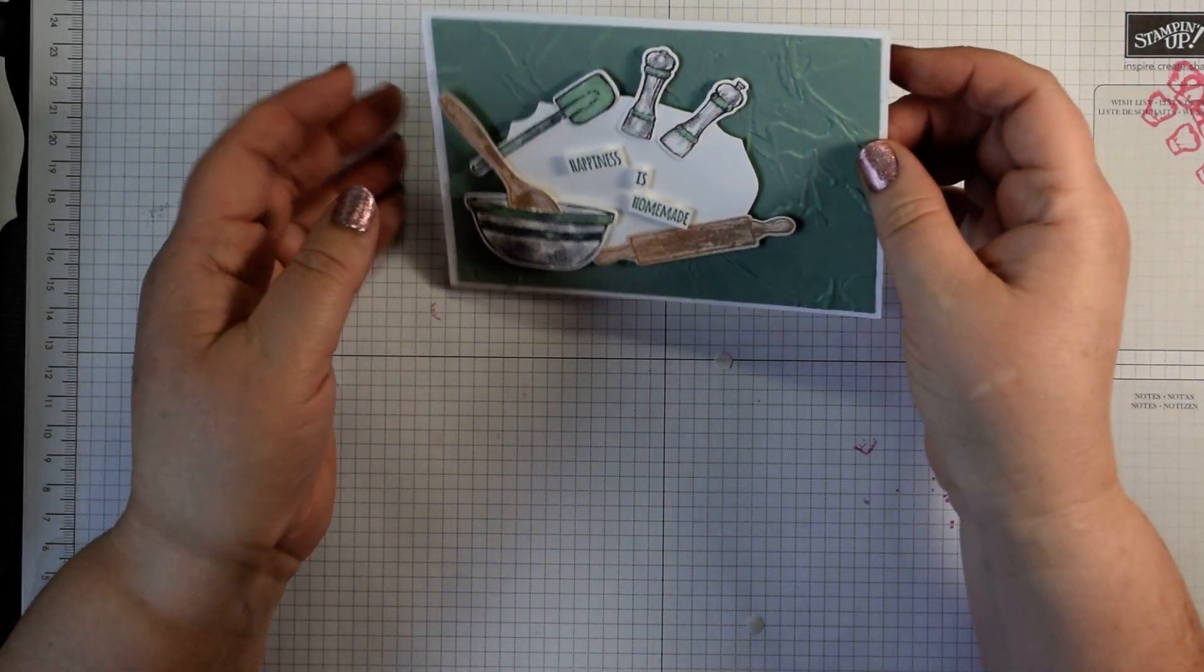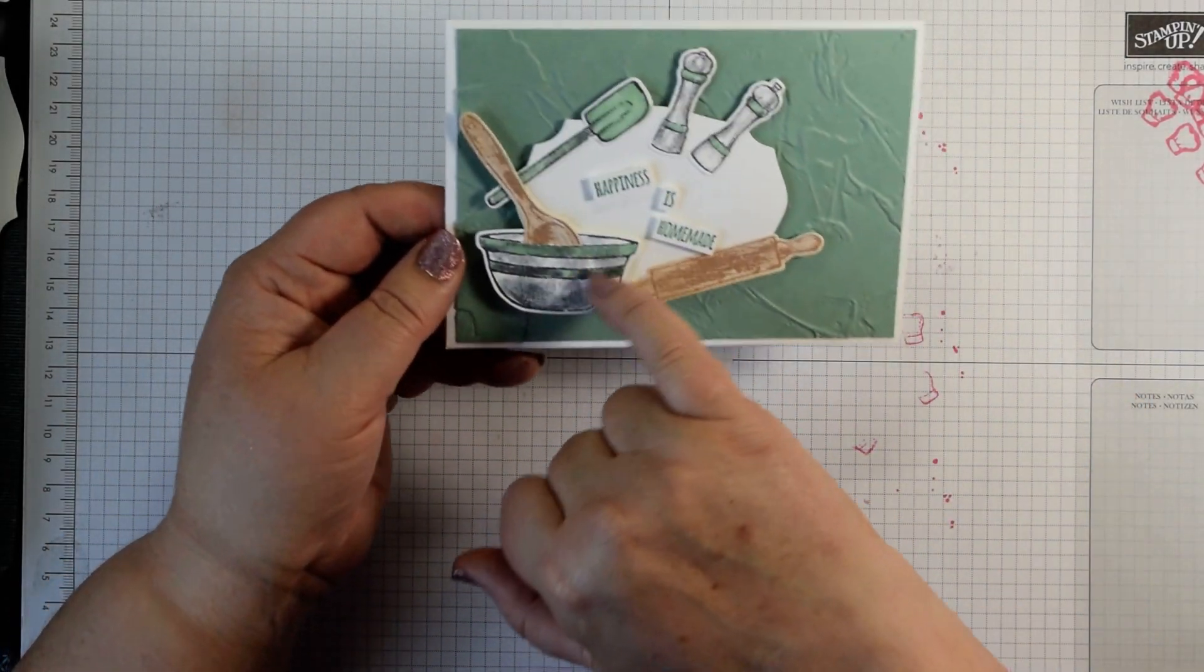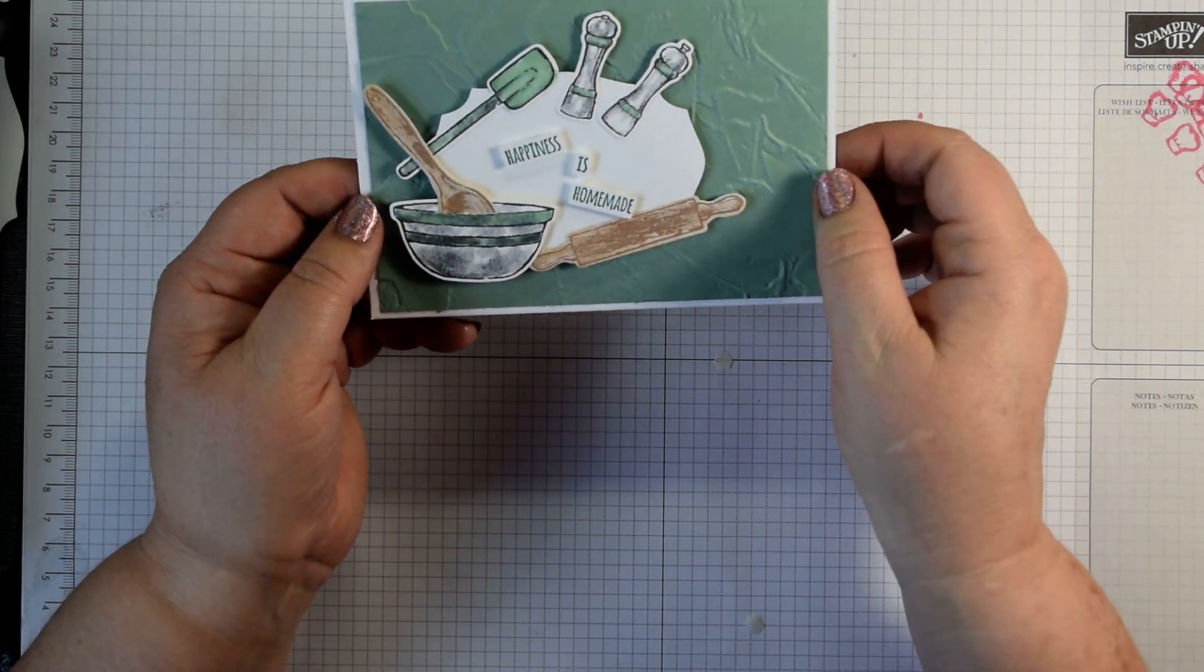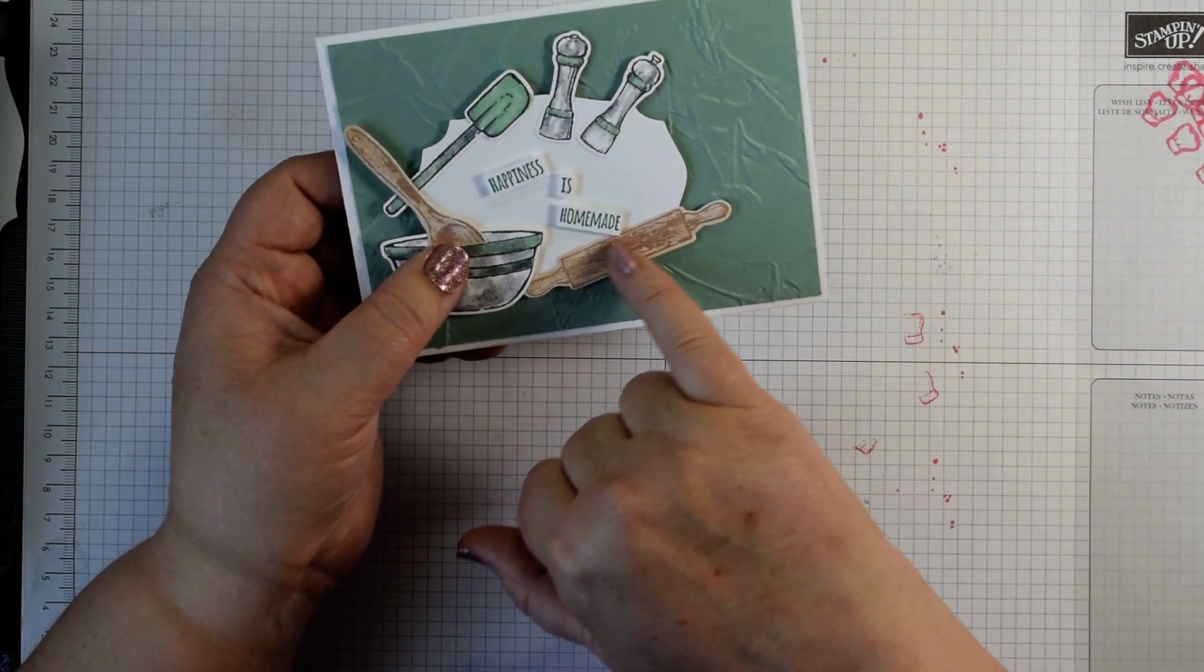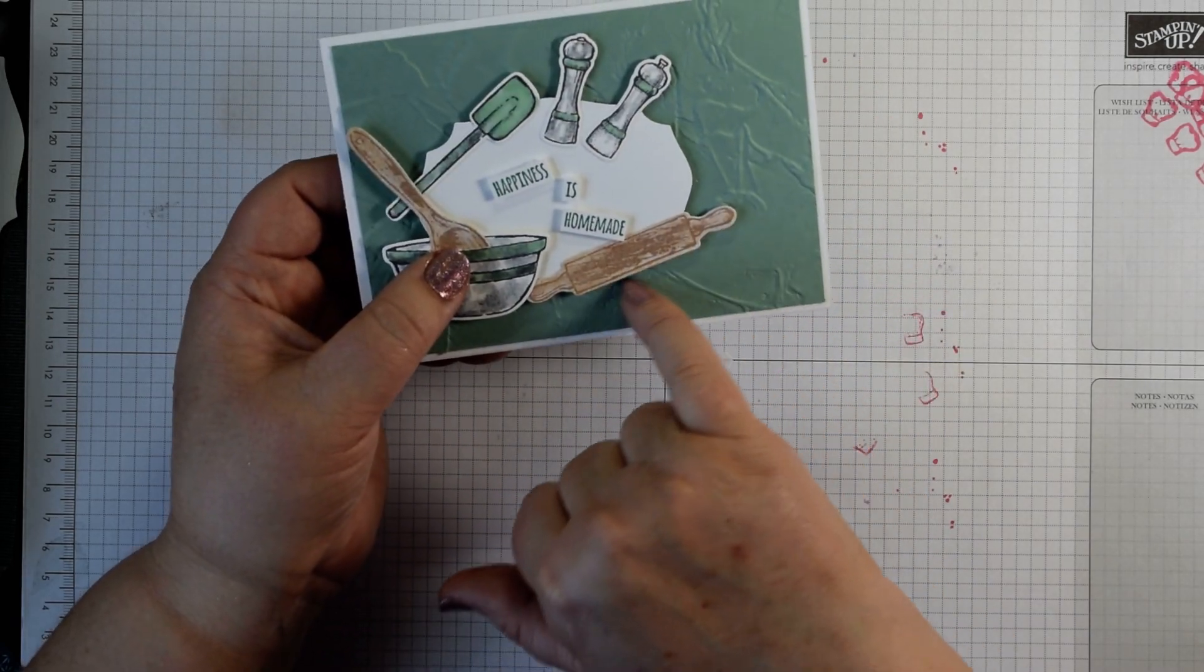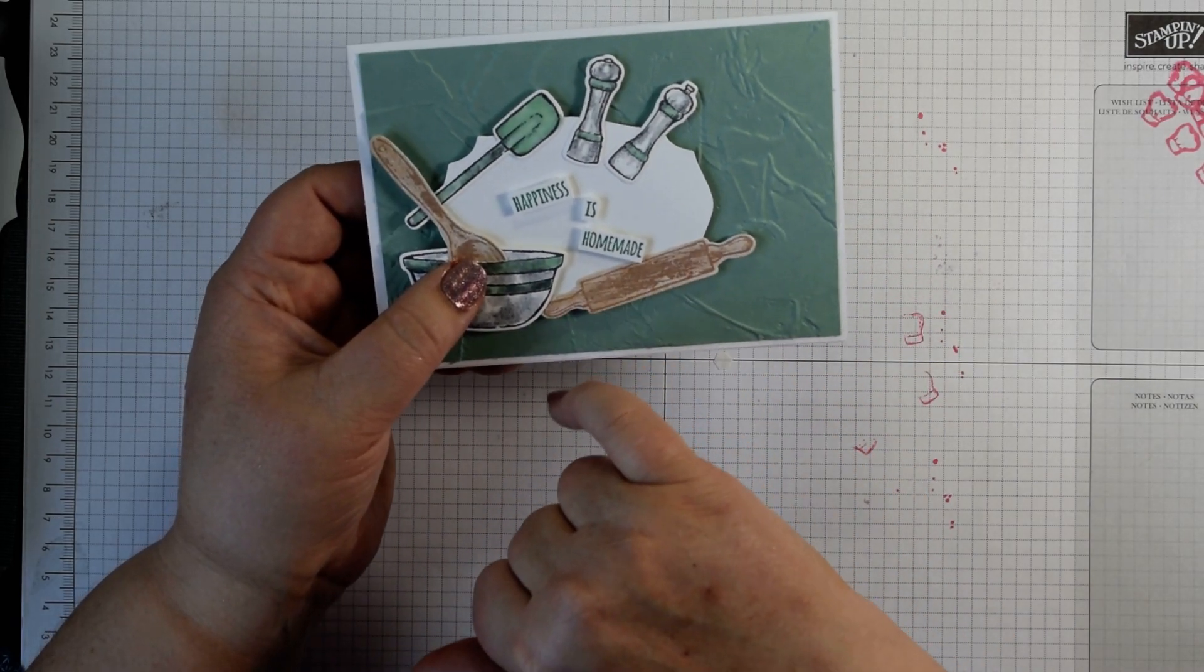This one I went for green, it reminded me of the old-fashioned kind of green bowls that you used to get for baking. I've also used some of our wood texture in good taste paper as well to give a real wood feel for that rolling pin and wooden spoon.